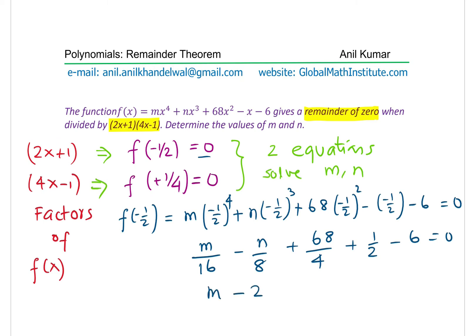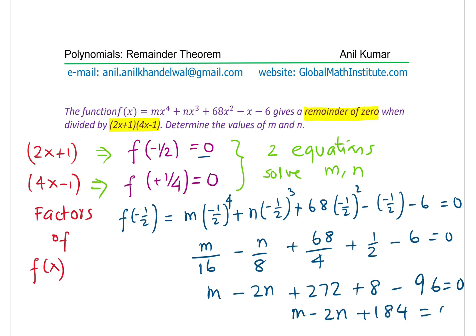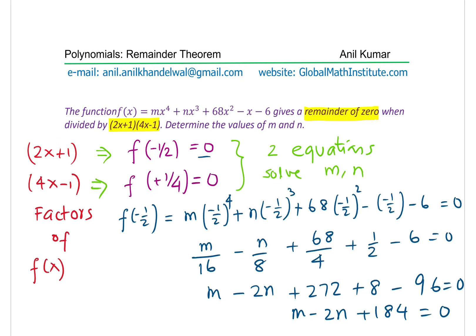So 4 × 68 = 272, and 272 + 8 = 280. Then 280 - 96 = 184. So we get M - 2N + 184 = 0, which means our first equation is M - 2N = -184. That is the equation from the first condition, f(-1/2) = 0.